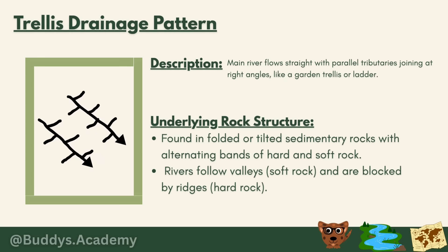The sixth is the trellis drainage pattern — arguably one of the easiest drainage patterns to identify. The main river flows straight with parallel tributaries joining at right angles, resembling a garden trellis or a ladder. Main streams are parallel to each other, flowing in the same direction on steep or uniform slopes, with tributaries joining the mainstream at 90-degree angles. This pattern is found in folded or tilted sedimentary rocks with alternating bands of hard and soft rock — rivers follow soft rock valleys and are blocked by hard rock ridges.